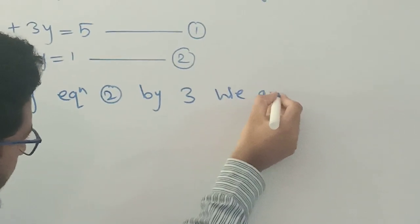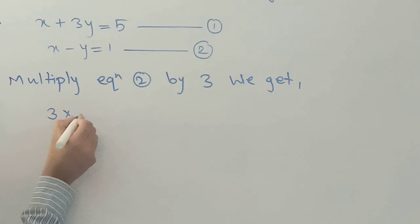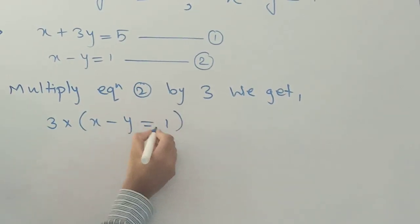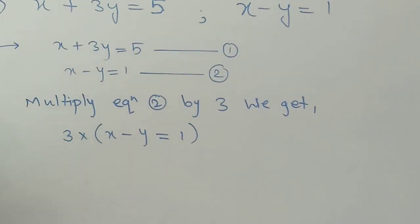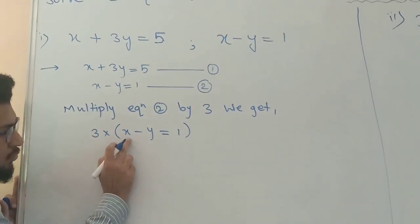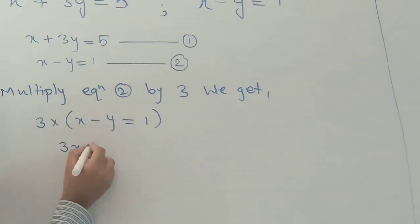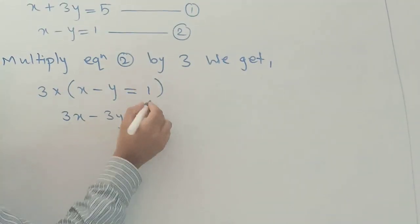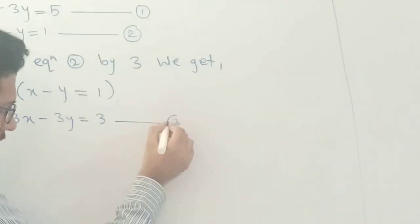When we multiply equation 2 by 3, we write 3 into x minus y equals to 1. Multiplying through: 3 into x gives 3x, and 3 into y gives minus 3y, and 3 times 1 equals 3. We call this equation number 3.